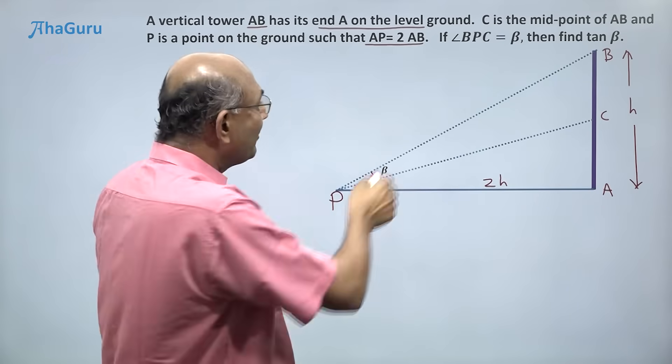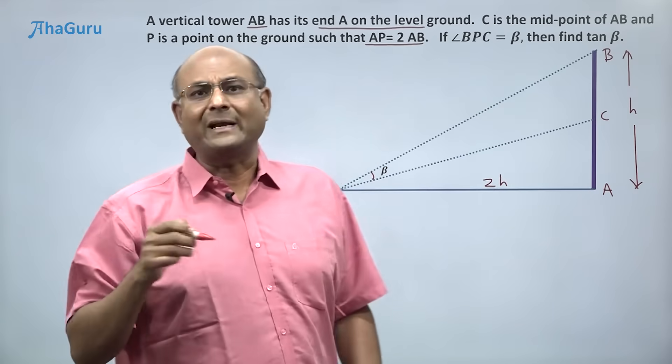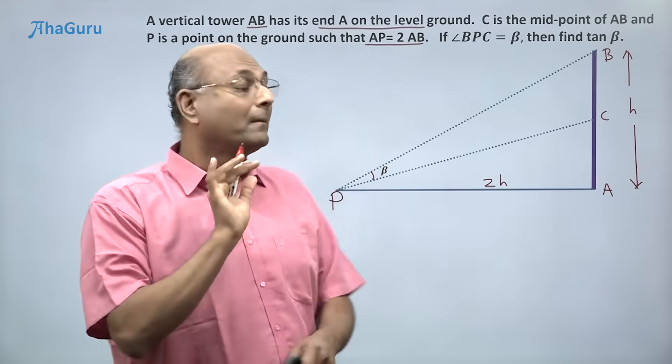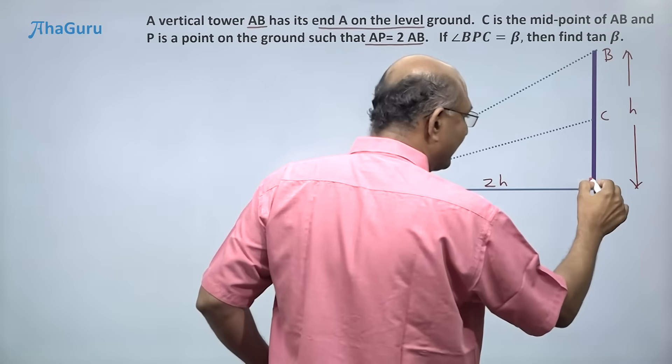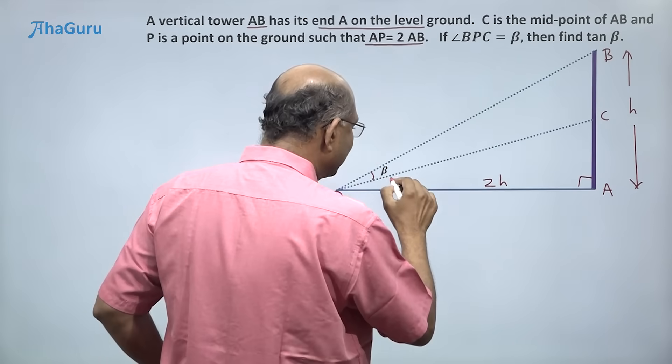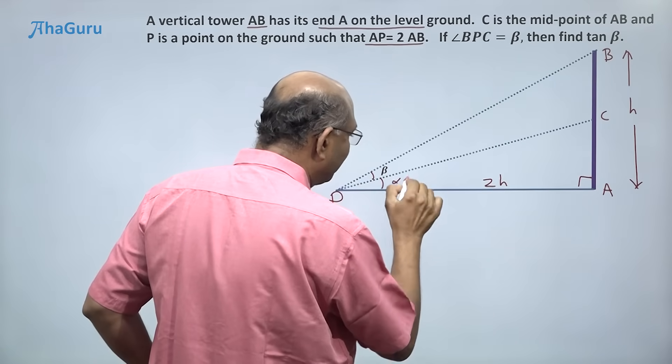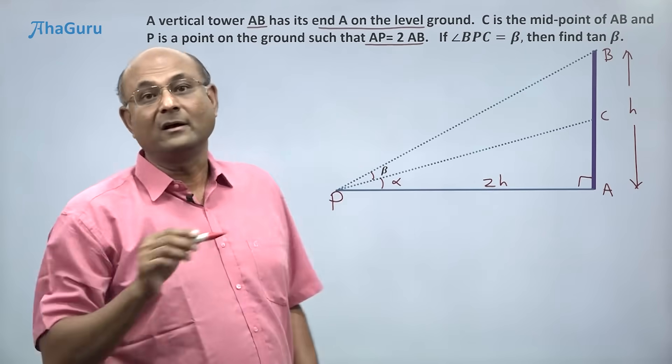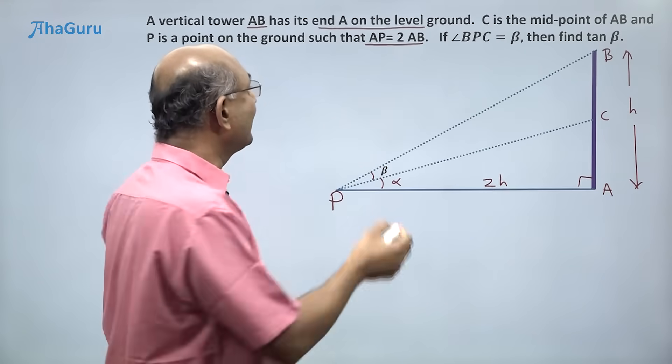But how do I find the tan of this angle? I don't have a right angle triangle there, but I do have a right angle here. And so this angle, if I called it alpha, I can find tan alpha very easily. What is tan alpha?